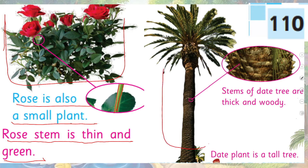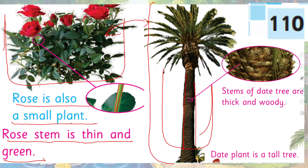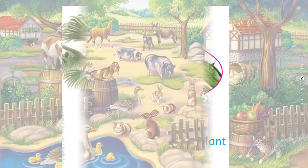Next, here you can see a date palm tree. Its trunk — its stem — is very thick and woody, and it is brown in color. Its leaves are very different from those of the rose. It is a very tall tree. So you can see how both are different from each other — both are plants, but both are different.